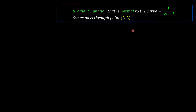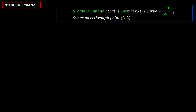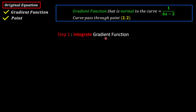Let's have another question. The gradient function that is normal to the curve is 1 over 6x minus 2, and the curve passes through the point (2, 2). Note that this is the gradient function of the normal — meaning it's perpendicular to the curve, not tangent. So we need to find the gradient function that is parallel to the curve by applying the perpendicular gradient formula from coordinate geometry: m1 times m2 equals negative 1.